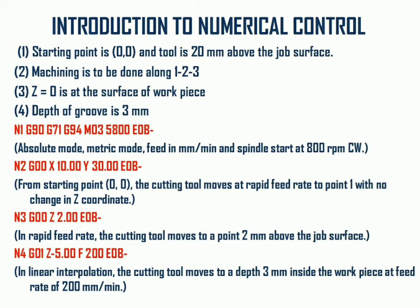Machining is done from points 1 to 2 to 3. The Z surface of the work is considered 0, and the depth of the groove from points 1-2 and 2-3 is 3 mm. The first instruction block N1 uses G90 for absolute dimensioning, G71 for metric mode, G94 for feed rate in mm/min, and M03 for spindle start at speed S800, EOB. The second block uses G00 for non-machining rapid traverse to the machining point.